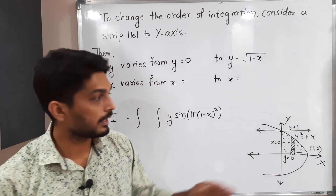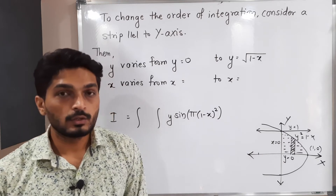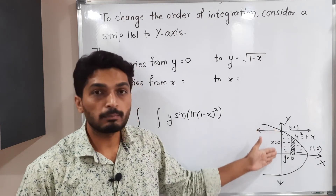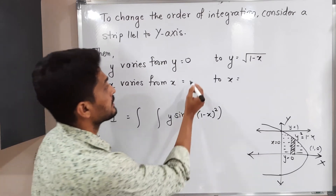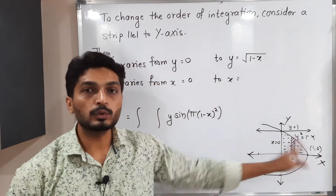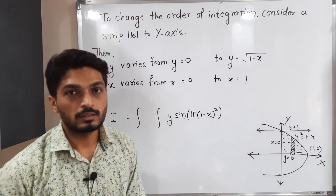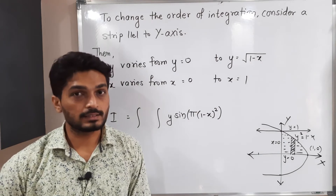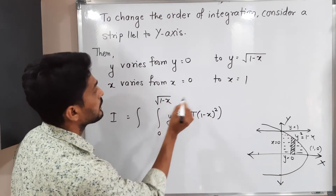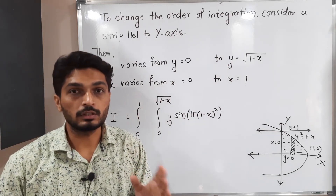We take the positive square root since the region lies in the positive part of the Y-axis. Moving the strip from left to right: on the left it reaches X = 0, and on the right it reaches the vertex point (1, 0), so X goes up to 1. Therefore, the inner integration is with respect to Y from 0 to √(1 − X), and the outer integration is with respect to X from 0 to 1.